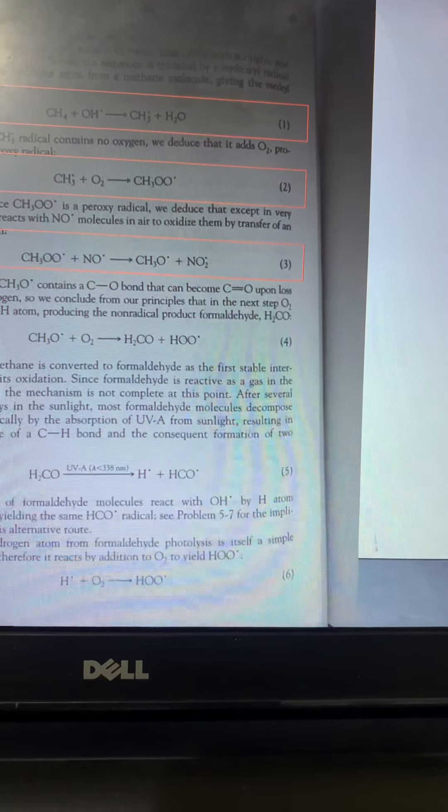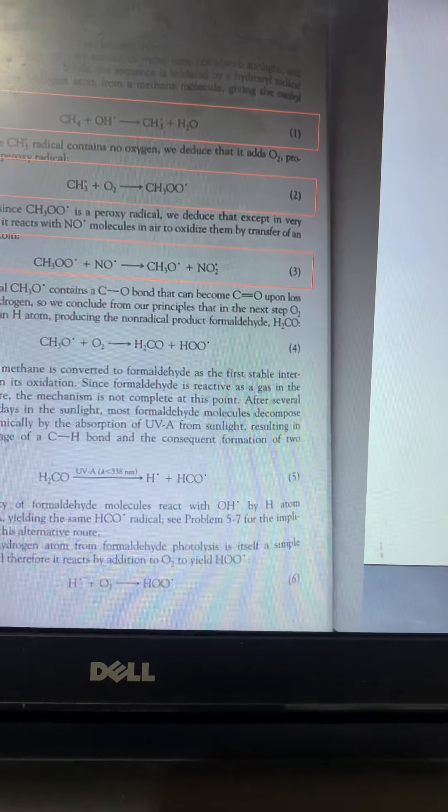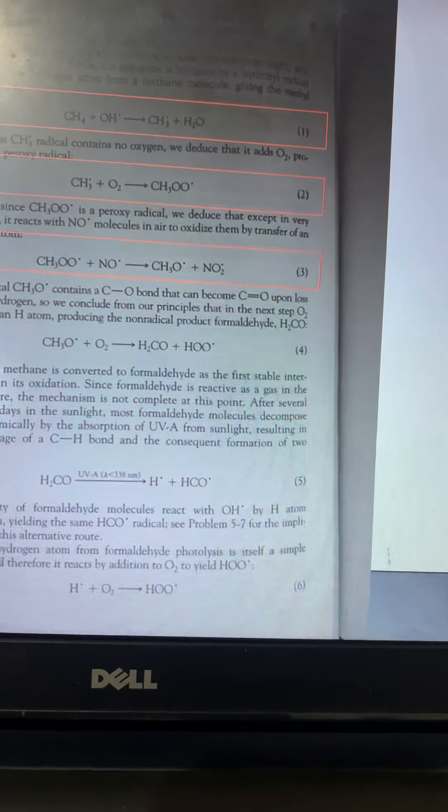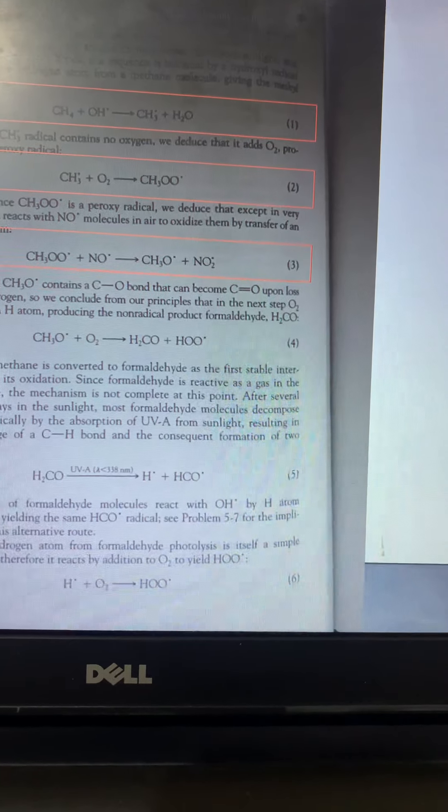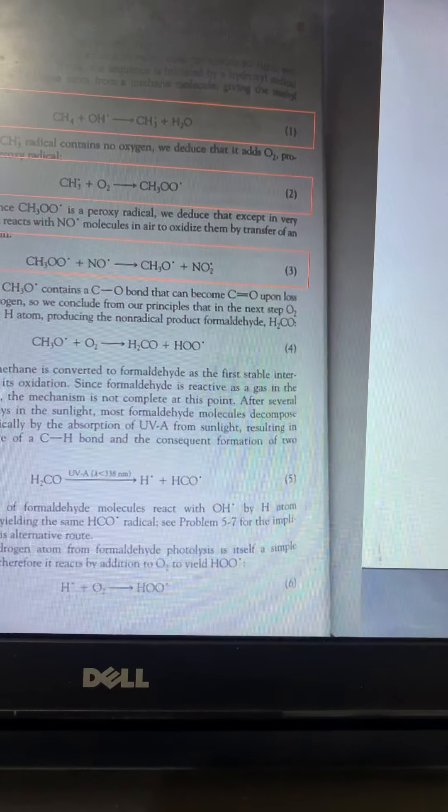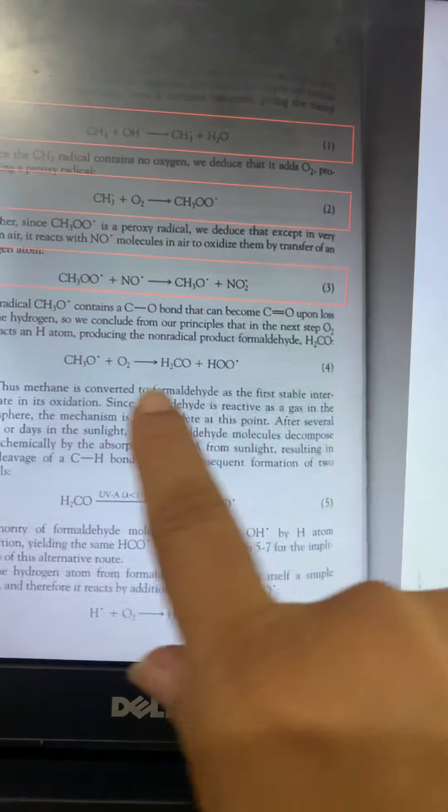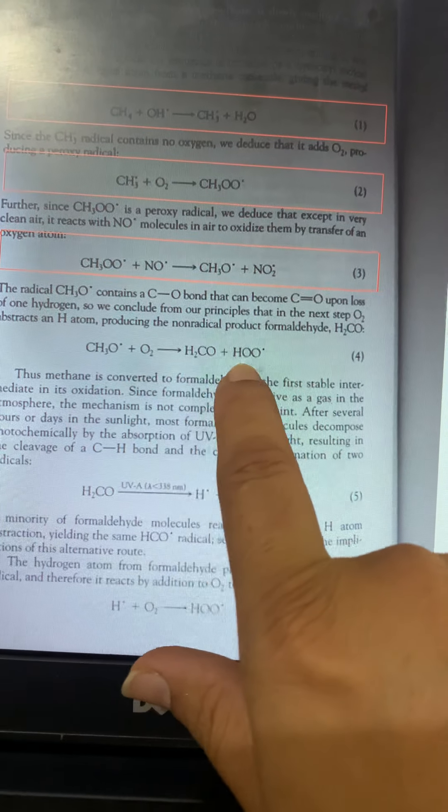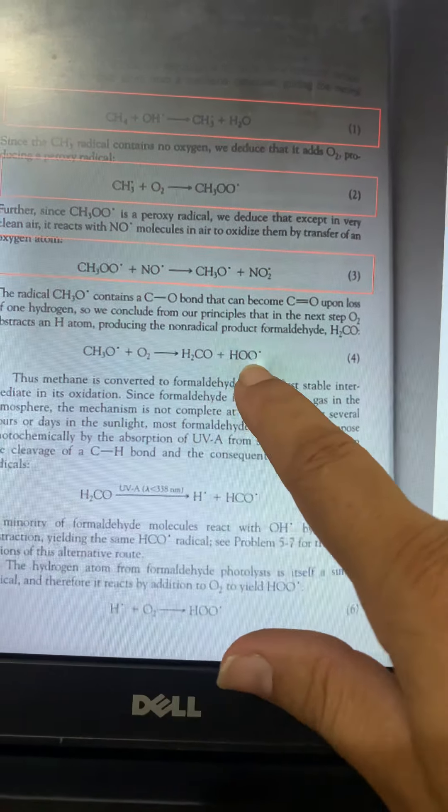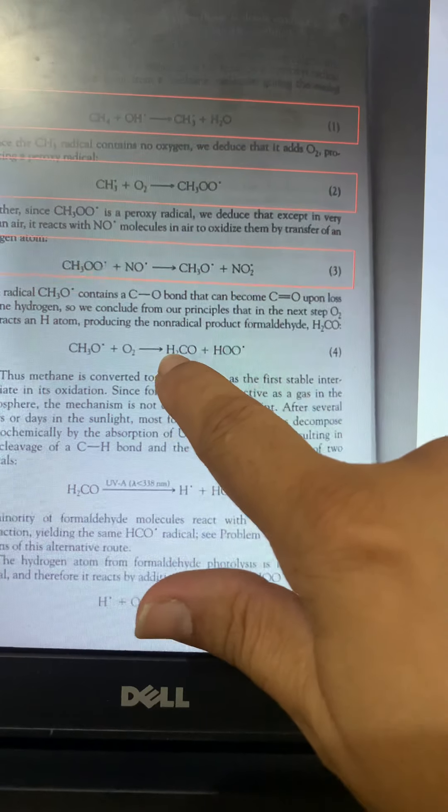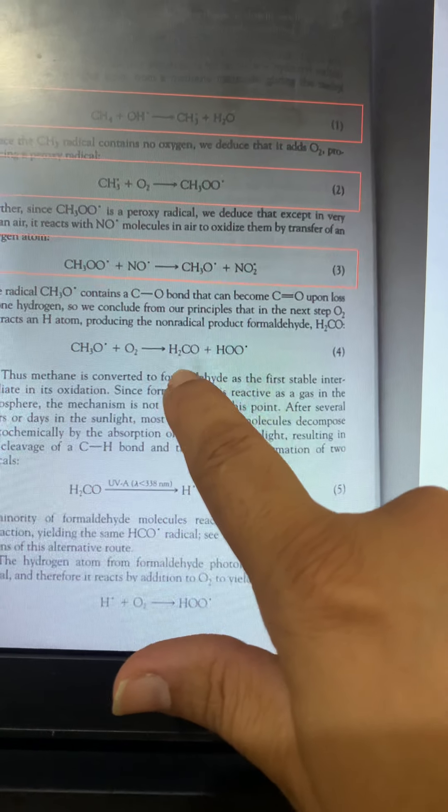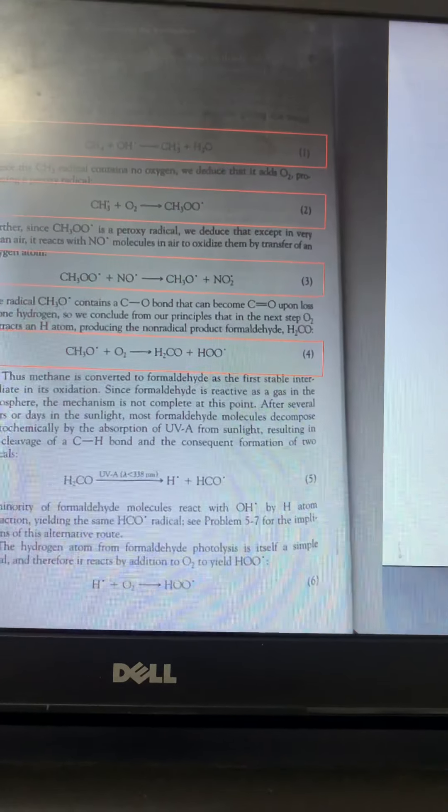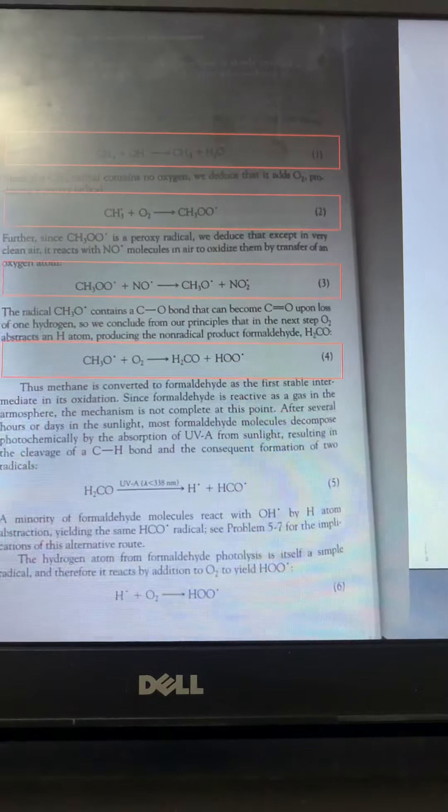This CH3O radical contains C-O bonds, C single bond O, and the other side, three sides is H3. That can become C double bond O for loss of one hydrogen. So in the presence of oxygen, oxygen will extract the hydrogen atom from CH3O. And it will be converted into HO2 radical, peroxy hydrogen radical, and it will become formaldehyde molecule. So in the reaction 4, there is the production of formaldehyde starting from the CH3O radical.